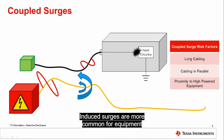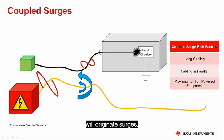Induced surges are more common for equipment with long cabling, cabling that will run in parallel with other cables, or proximity to high powered equipment that will originate surges.